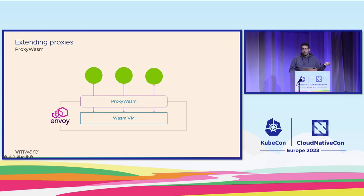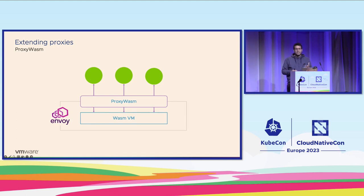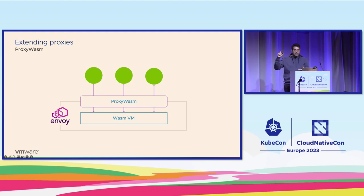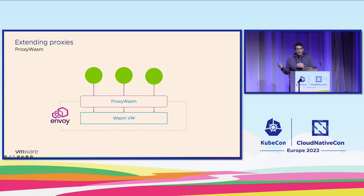Proxy Wasm was presented in February 2020 by a joint effort by Solo.io, Google, and the Istio community. Proxy Wasm is actually multiple things. It's an ABI — it specifies what interface the WebAssembly guests can talk to, what functions they can call, and what functions the host can call inside of the WebAssembly sandbox.